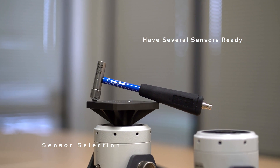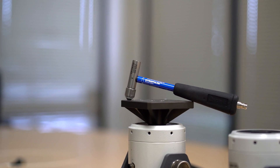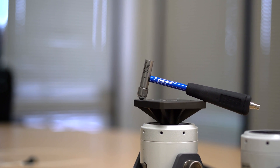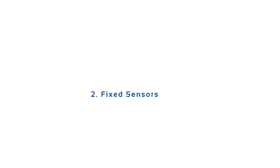It would be helpful to have a few impact hammers with different sensitivities and different weights. Another consideration is whether to use a few sensors which will be roved over the structure, or to use enough accelerometers so that all sensors can stay on the structure during measurements. The choice is often limited by lab budget, but it's often necessary to use the latter approach to obtain top quality results.